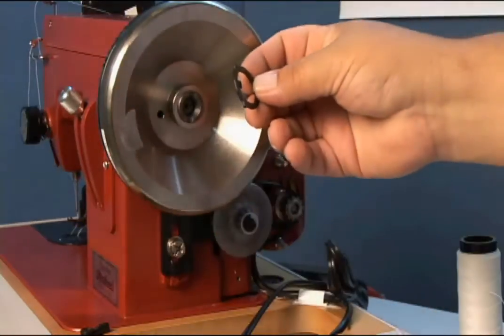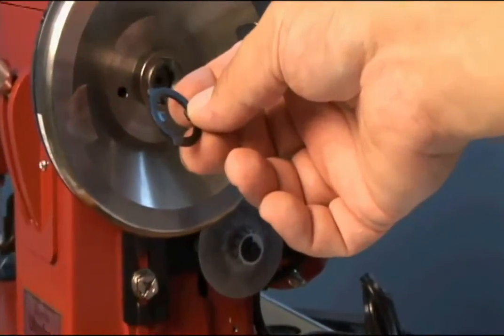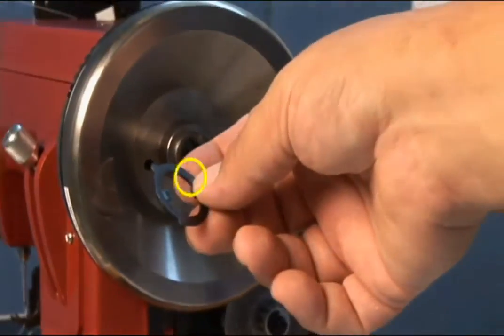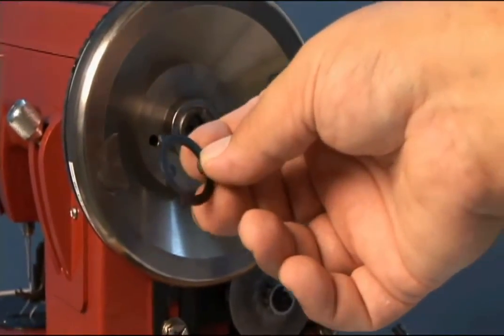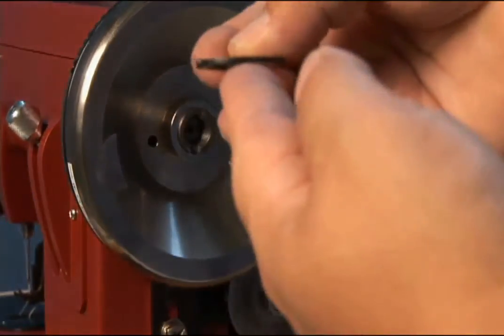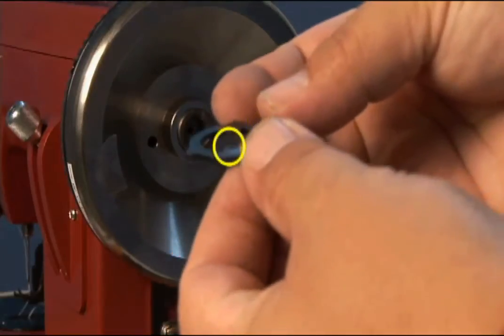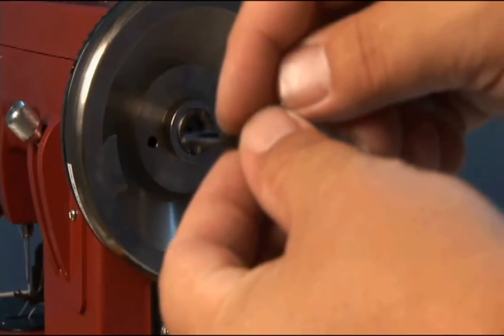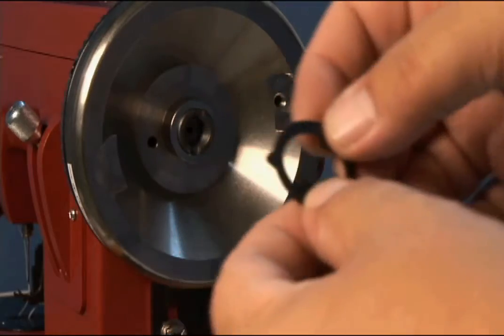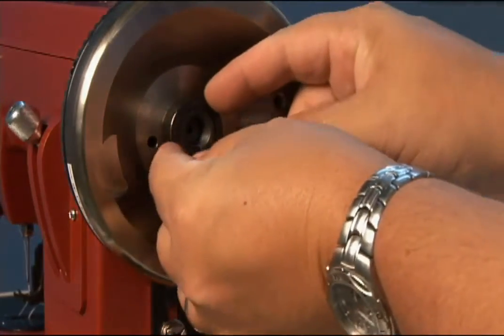Now, take your clutch washer and inspect it. You'll notice there are three prongs on the outside and two prongs on the inside. We want to look at those prongs on the inside. If you notice, there's a raised side. That raised side must face out, away from the balance wheel when you put it on here.